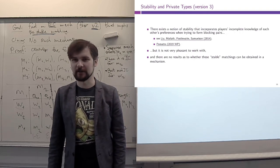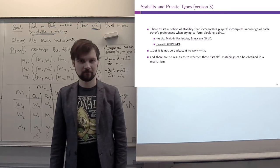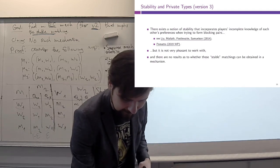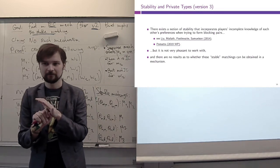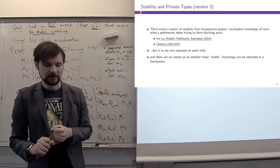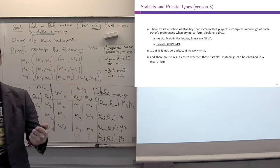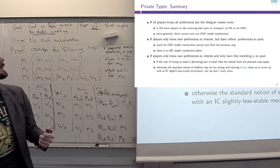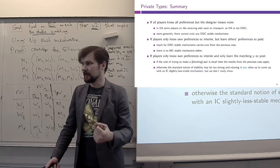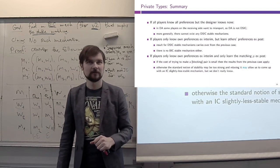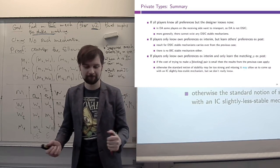This concludes our discussion of incomplete information models of matching. We talked about different ways of incorporating incomplete information into matching, and we saw that most of the time there are no positive results — no mechanisms we can use for all settings. The bottom line is that incomplete information matching models are a story of failure, which contrasts with matching models in general being a story of huge success. Incomplete information really broke things here.